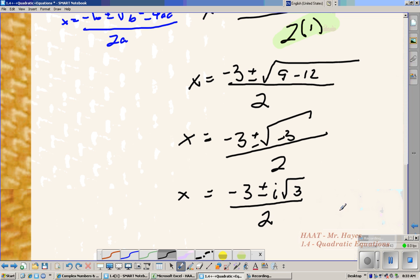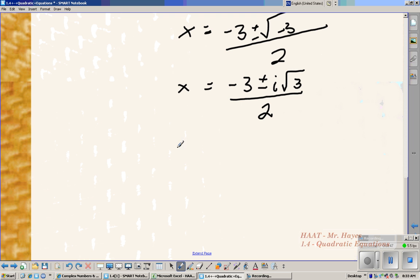Now they're going to expect you to write this in complex standard form. So when you do that, you're going to need to go through and say, okay, work this down into a real part. So I'm going to bring this down into negative three over two plus or minus i square root of three over two. And that is your answer.